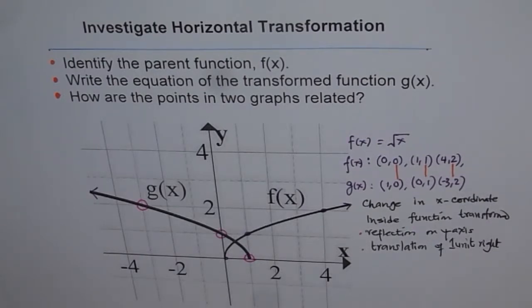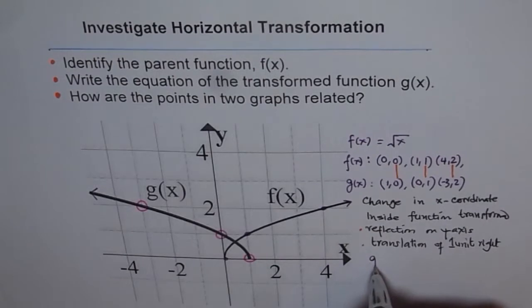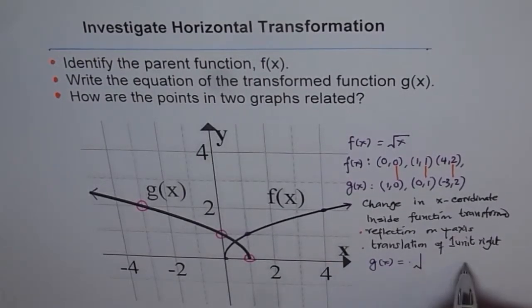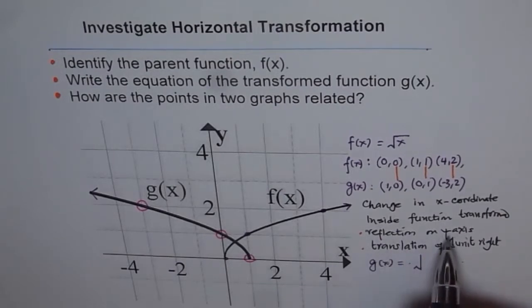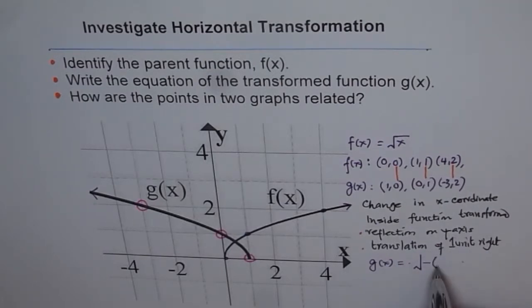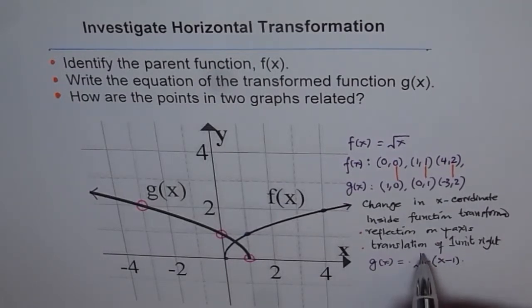So it moves one unit right. So these are the two things which you really observe from here. So now how will they happen and what should be the equation? So from here, you can say g(x) should be square root of, nothing outside. Only inside. Reflection on y-axis means minus here. And then within bracket, translation of one unit to the right. That means x minus 1. And you get your equation.